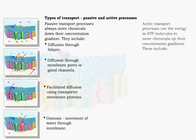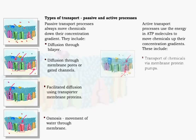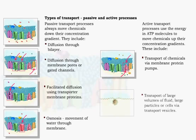Active transport processes use energy from ATP to move molecules. They include transport of chemicals across the membrane using protein pumps, and transport of large volumes of fluid, large particles, or cells via transport vesicles.